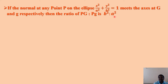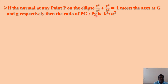You have to prove that PG:Pg = b²:a². So, you take the normal at any point on the ellipse. It intersects the coordinate axes at capital G and small g respectively. P is the point on the ellipse, and we have to show that the ratio of distances from P to G and from P to g equals b²:a². This is your aim.